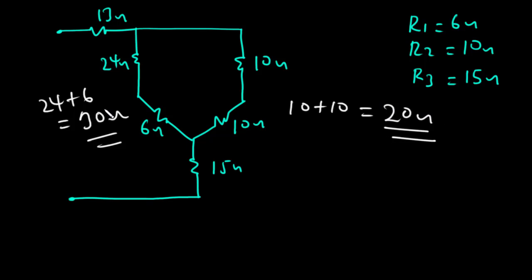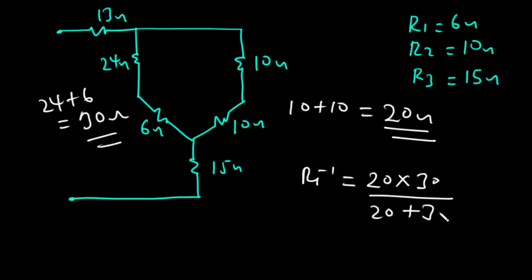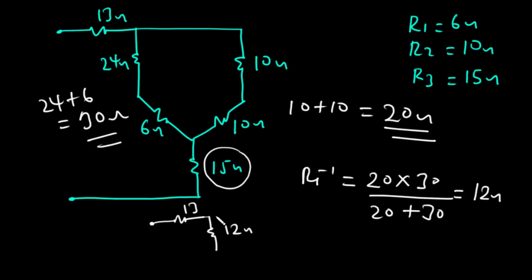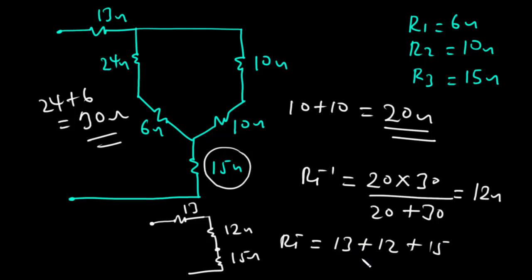The 20-ohm and 30-ohm resistors are in parallel, so their equivalence is 20 times 30 divided by (20 plus 30), which equals 12 ohms. The final circuit has the 13-ohm resistor, the 12-ohm resistor, and the 15-ohm resistor all in series. So the total resistance RT equals 13 plus 12 plus 15 = 40 ohms.